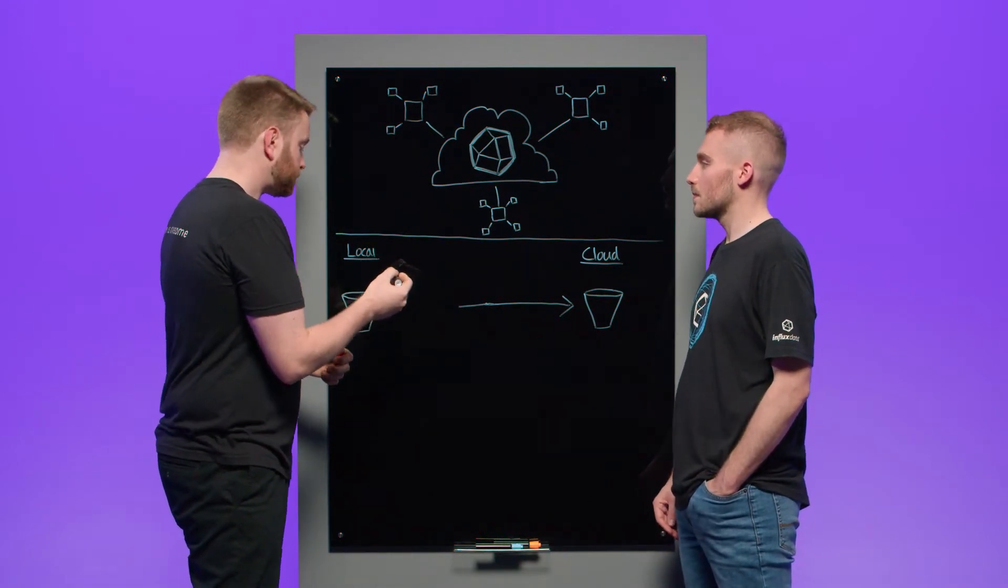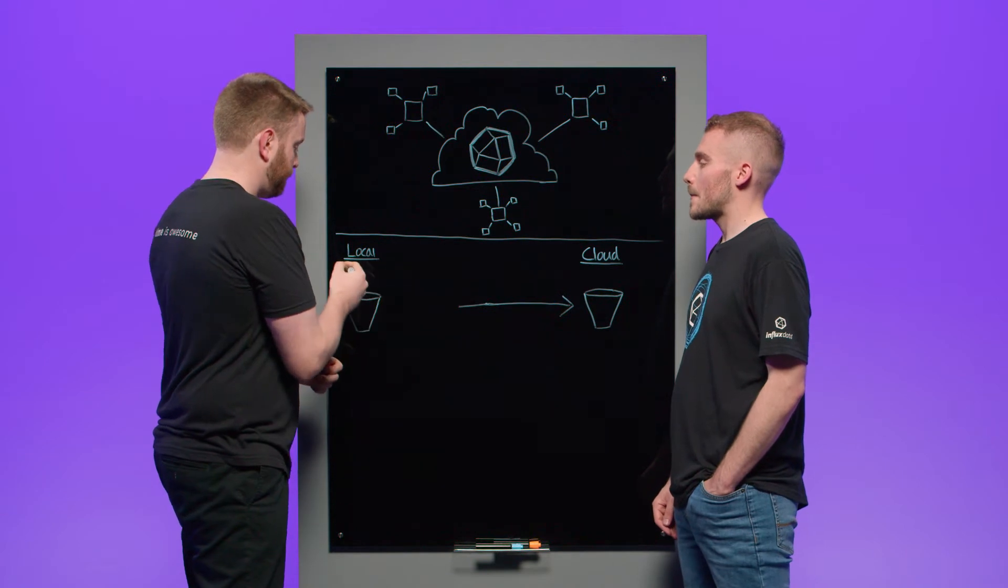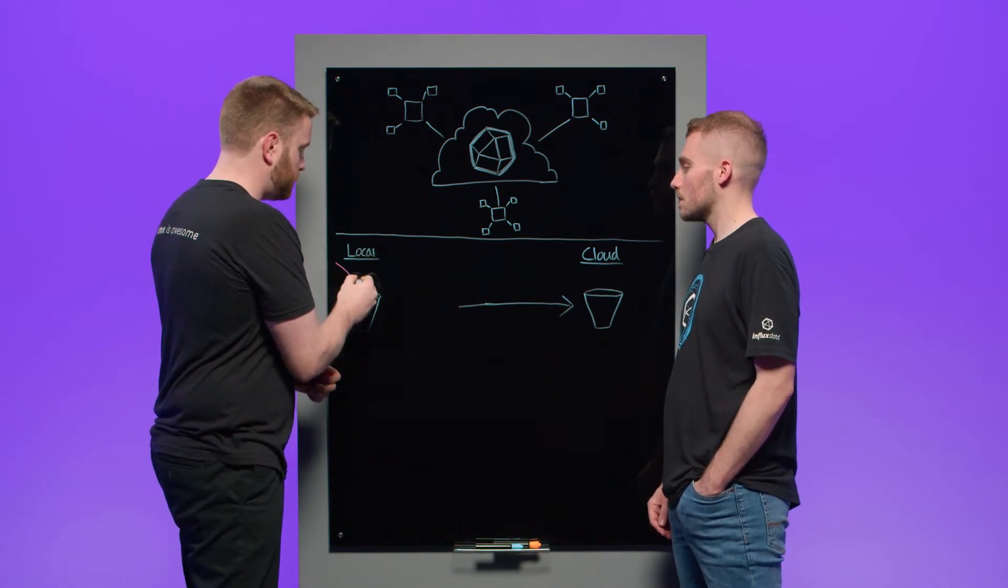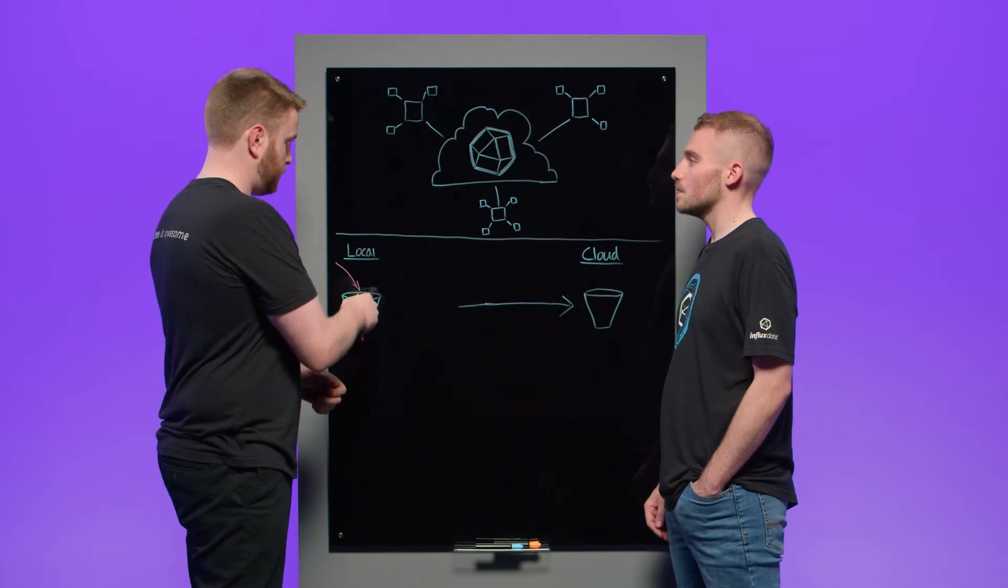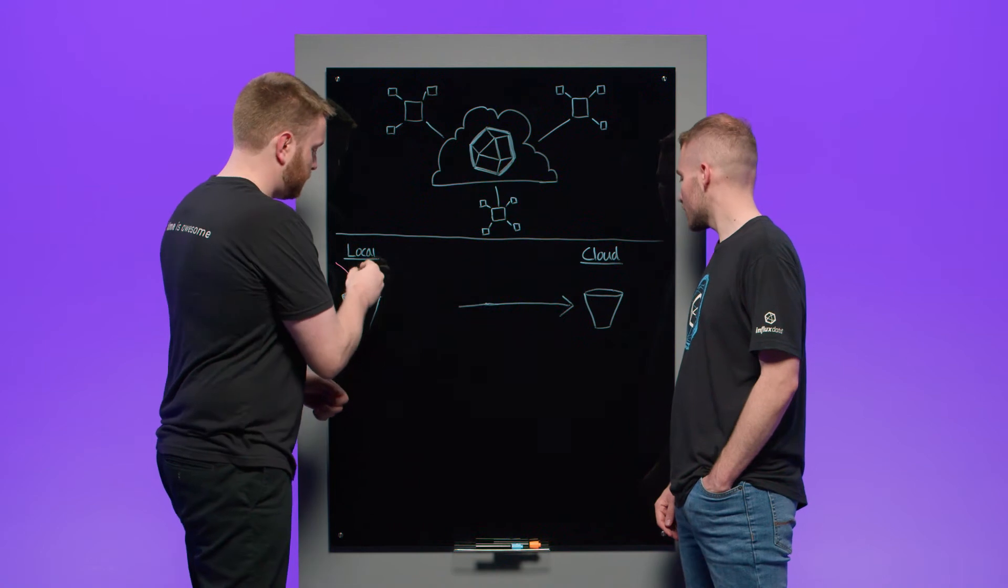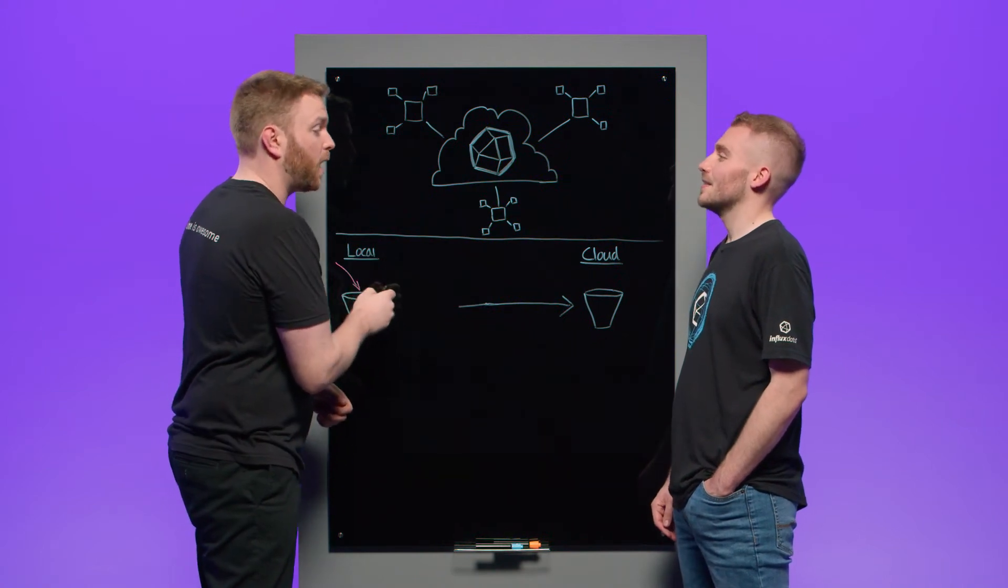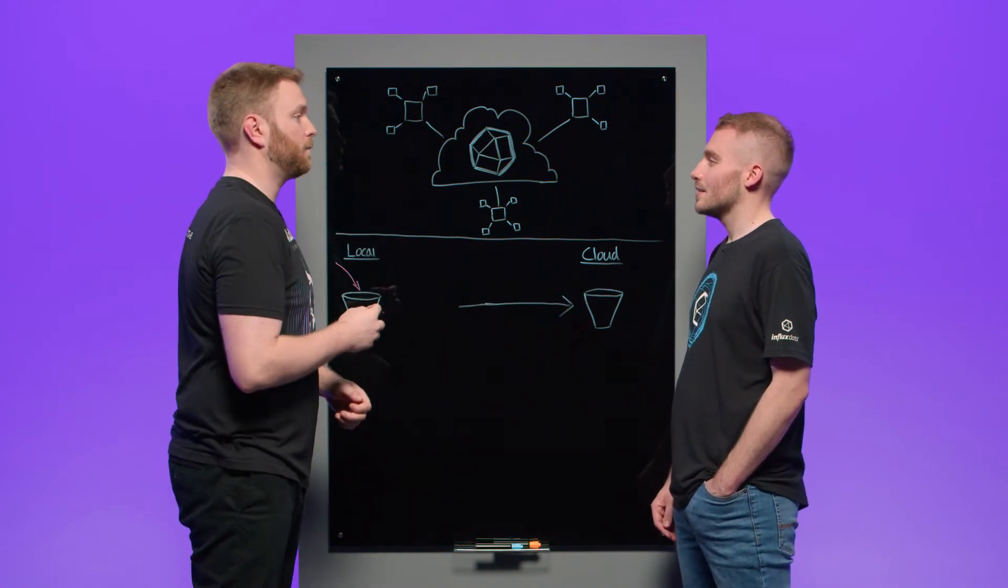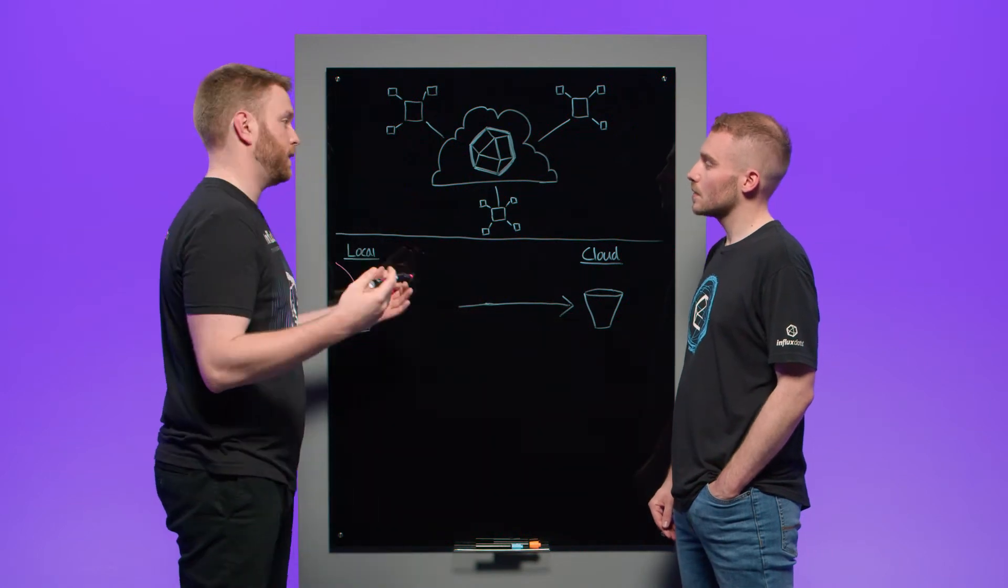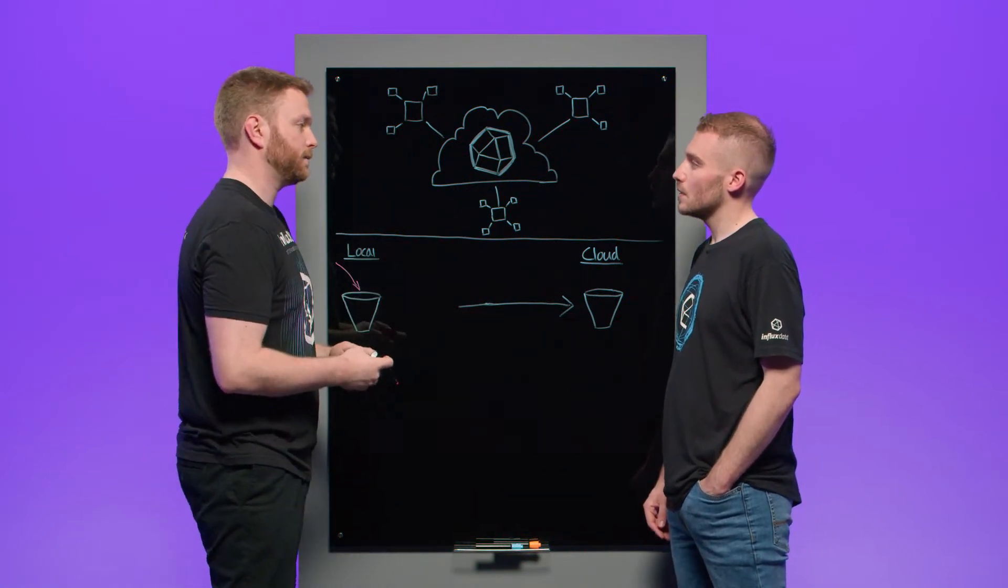The way it works, once those are configured, we'll follow the path of a data point. So let's say a data point is written into this bucket, destined for this bucket. That bucket is configured to replicate to Cloud. That data point will not only write there, but automatically be synced to this Cloud bucket. And the way it does that is by writing to a durable on-disk queue first. And then that queue will flush to the Cloud when ready. But it happens very instantaneously.